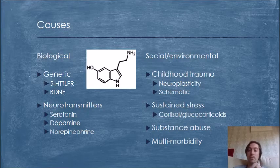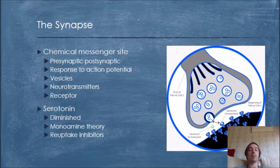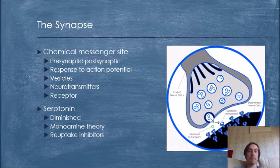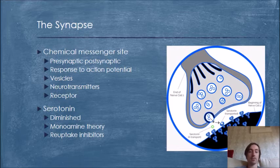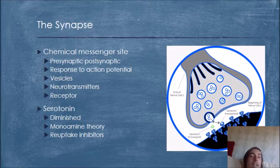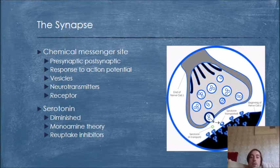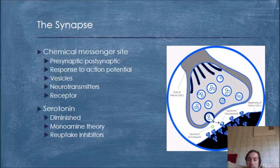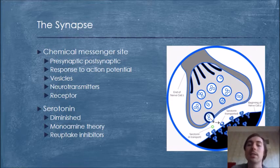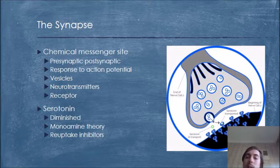So what is the synapse? The synapse is a chemical messenger site between two neurons where the presynaptic neuron is able to send information to the postsynaptic neuron. This is in response to an action potential — an electrochemical gradient that travels along the axon — after which vesicles release neurotransmitters to the receptor site. According to the monoamine theory, serotonin is diminished in depression, and so reuptake inhibitors are used. SNRIs and SSRIs — serotonin-norepinephrine reuptake inhibitors and selective serotonin reuptake inhibitors — stop serotonin from being reuptaken by the presynaptic neuron, keeping it active at the receptor site on the postsynaptic neuron.